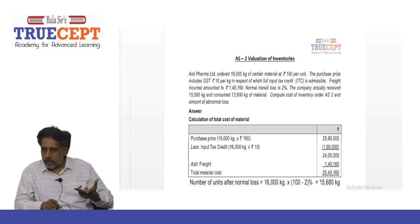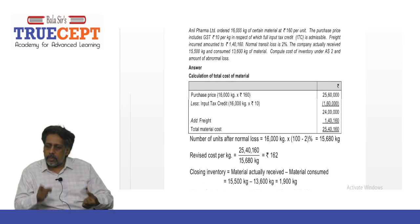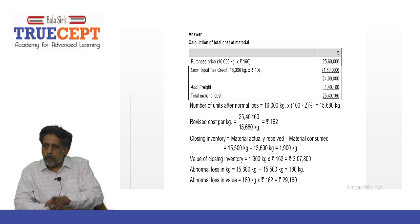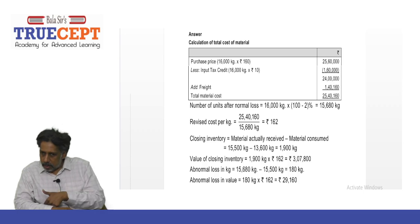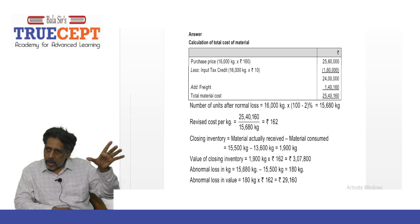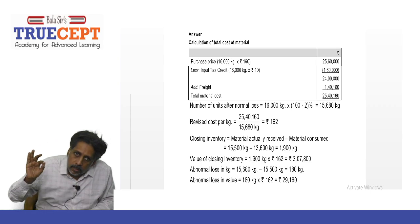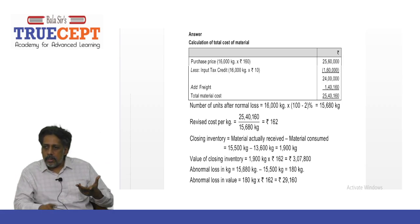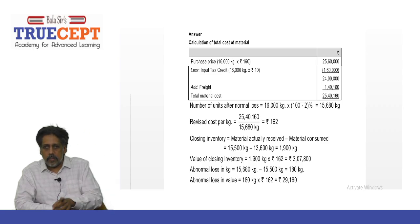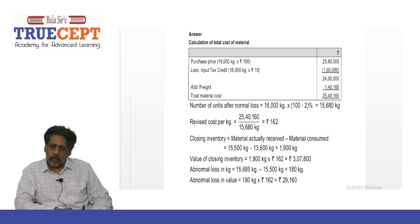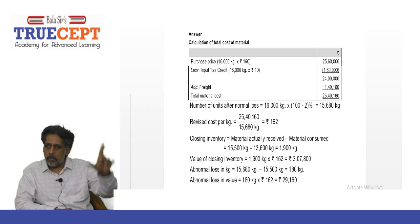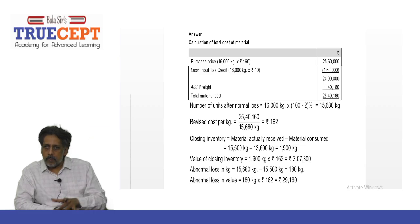Now, first, purchase price: 16,000 kilograms at rupees 160 per kg. AS2 very clearly says that in case taxes are refundable — in other words, where you enjoy input tax credit — do not include such taxes. Include only non-refundable taxes as part of cost of inventory. Purchase price: 16,000 × 160 = rupees 25,60,000. Less input tax credit: 16,000 × rupees 10 = rupees 1,60,000. That 1,60,000 should not be part of cost of inventory, giving rupees 24,00,000.